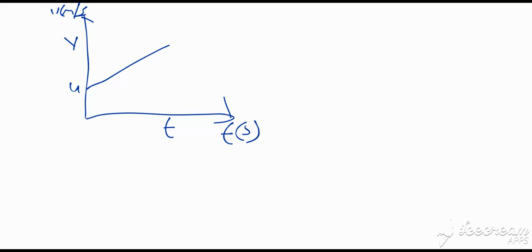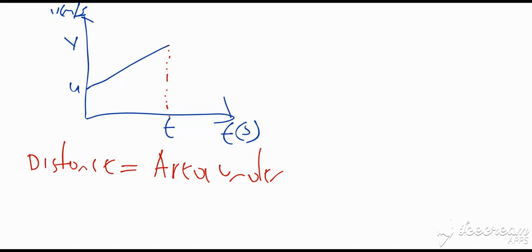To find the distance covered, we normally consider the area under the curve, using dotted lines to close the shape. What we end up with is a trapezium, and technically we can say that distance is equal to the area under the curve.